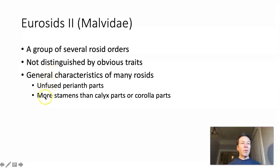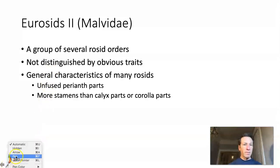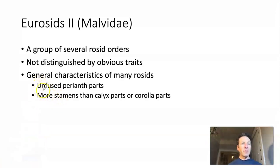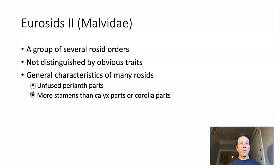To remind you of general characteristics of the rosids: they tend to have unfused perianth parts — though not always, and we'll see exceptions. They also tend to have more stamens than calyx or corolla parts, meaning more stamens than petals and more stamens than sepals.